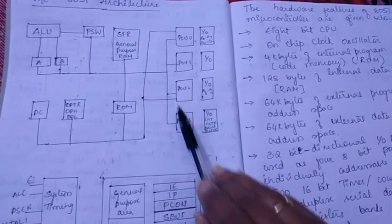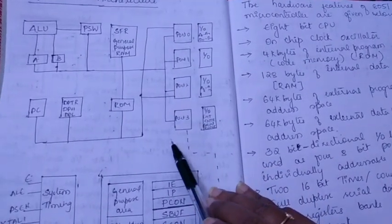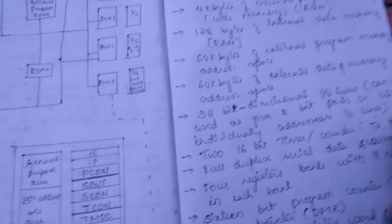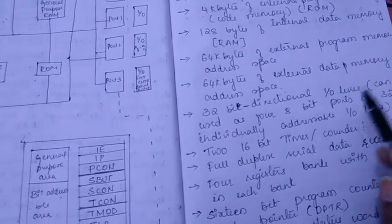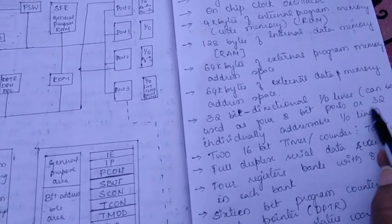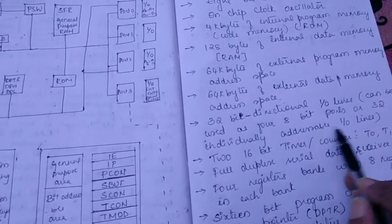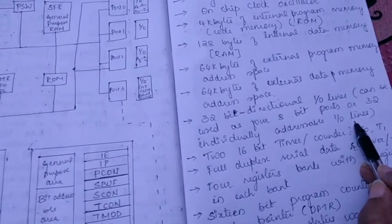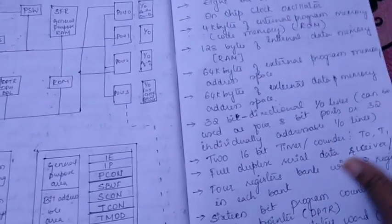So you have 32 bi-directional input output lines which can be used as 4 8-bit ports or just 32 individually addressable input output lines. Each line can also be used as an addressable input output line.